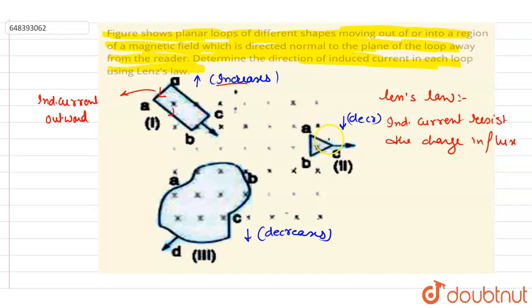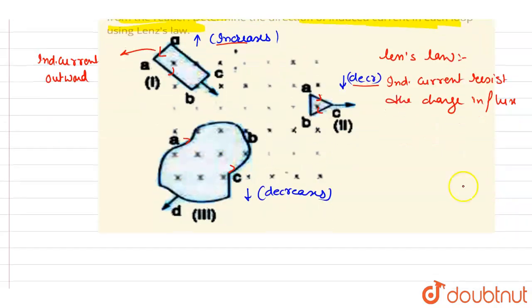Now if you see here, it is decreasing. So it will try to generate the flux so that the decreasing flux can be resisted. So it will generate a flux inward. So it will be in this direction. Just curl your finger, it will be inward. Same for this.